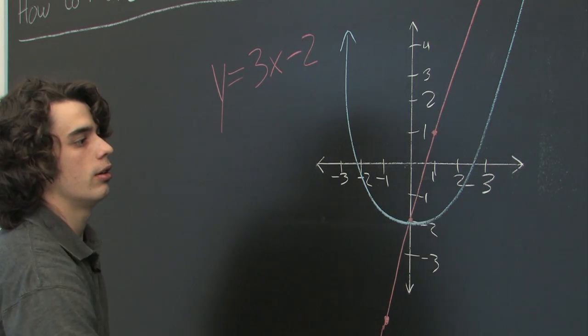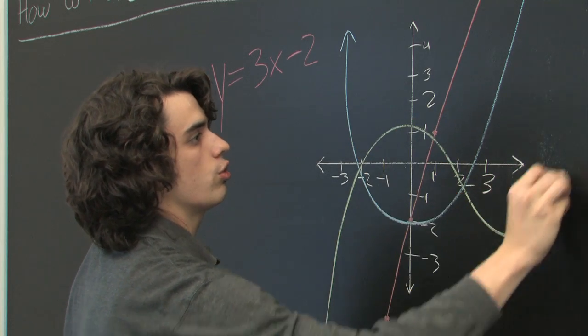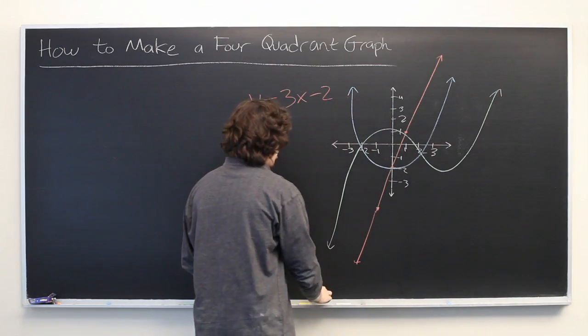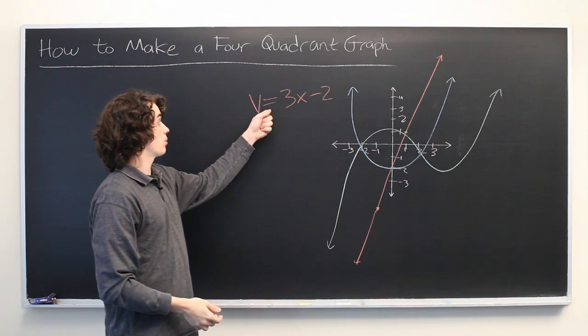Or you could have a cubic function, comes from negative infinity, shoots through all of the quadrants. But no matter how exotic your function is, graphing it is as simple as this was.